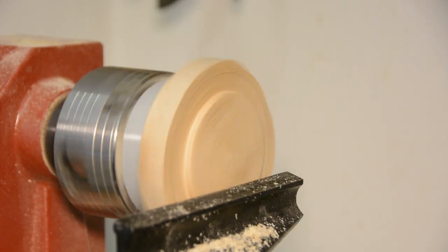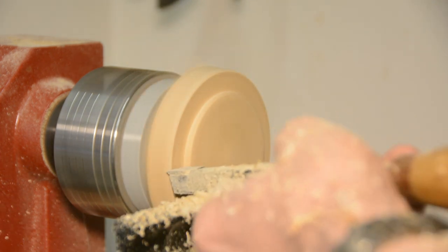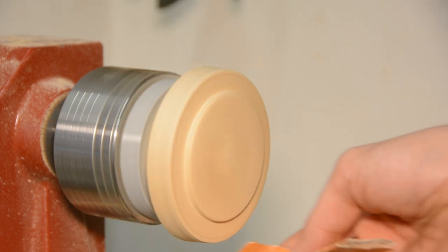We can then work on the outside of the lid. After working in a small radius I sand it smooth.